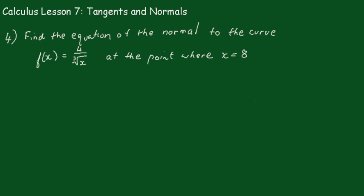OK, the last example, question 4 is a bit more challenging. To find the equation of the normal to the curve f(x) = 4/∛x at the point where x equals 8. So just pause the video and see if you can do this one. Alright, now at x equals 8, we have f(8) equals 4 over the cube root of 8. The cube root of 8 is 2. 4 divided by 2 is just 2.